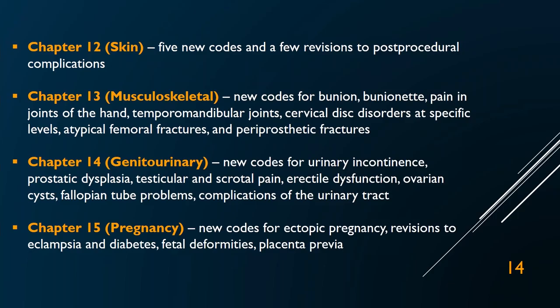Chapter 14 is genitourinary. If you work in that field, there are actually quite a few changes — new codes for urinary incontinence, prostatic dysplasia, testicular and scrotal pain, erectile dysfunction, ovarian cysts, fallopian tube problems, and complications of the urinary tract. I'm telling you this so that if any of these sound familiar to you, you take a note and go back to check those out. If you don't deal with genitourinary conditions in your field, don't worry about it. I want you to listen for what sounds familiar and then dig into the details.